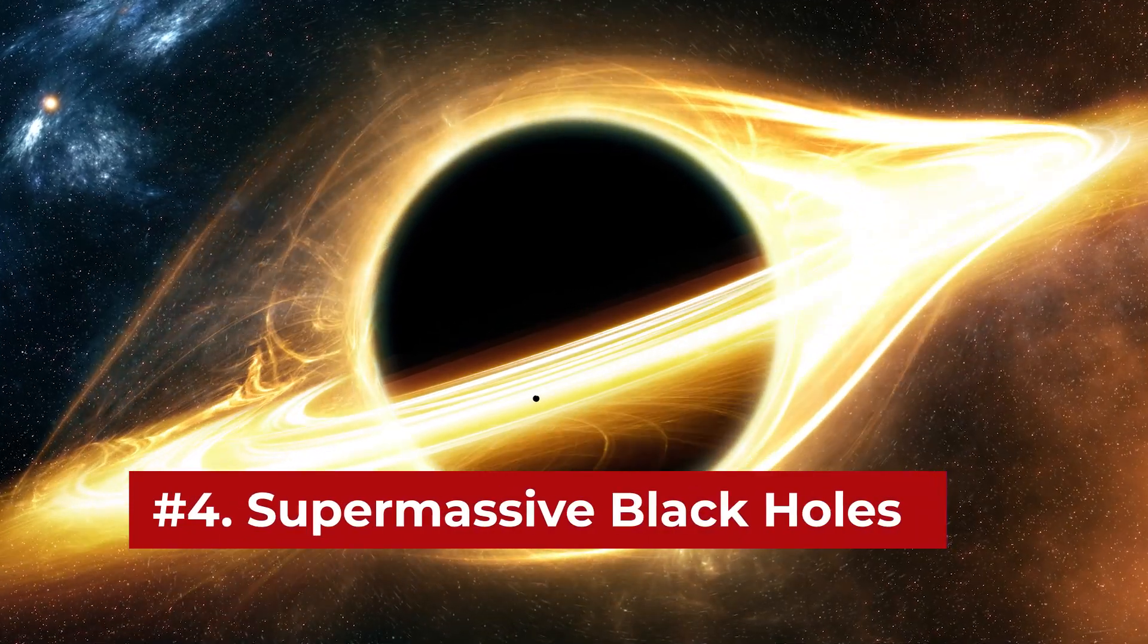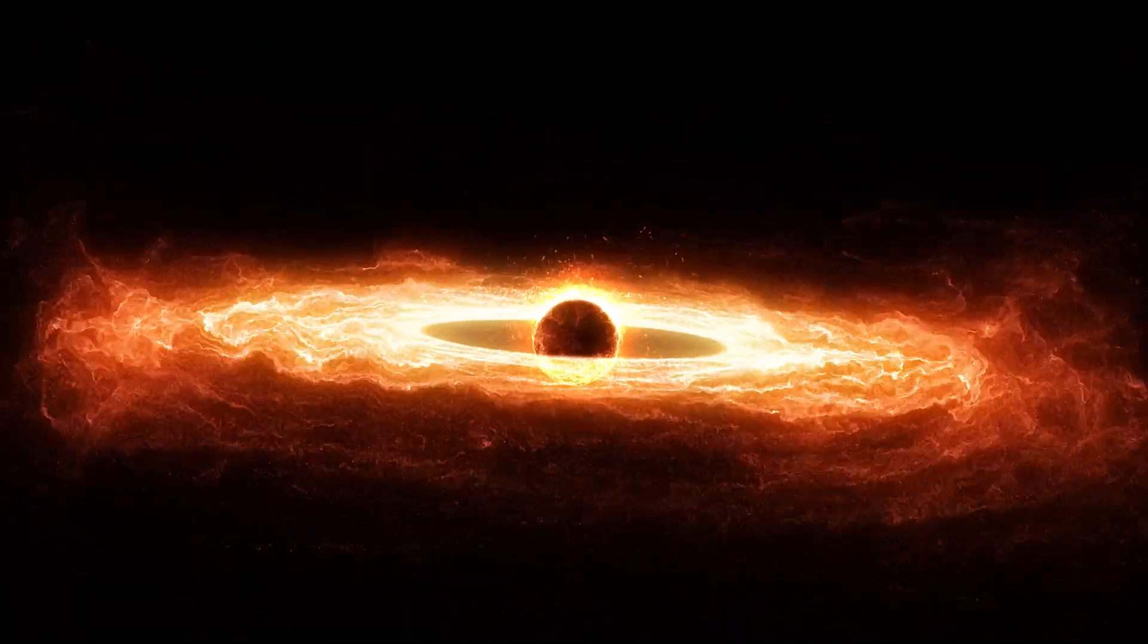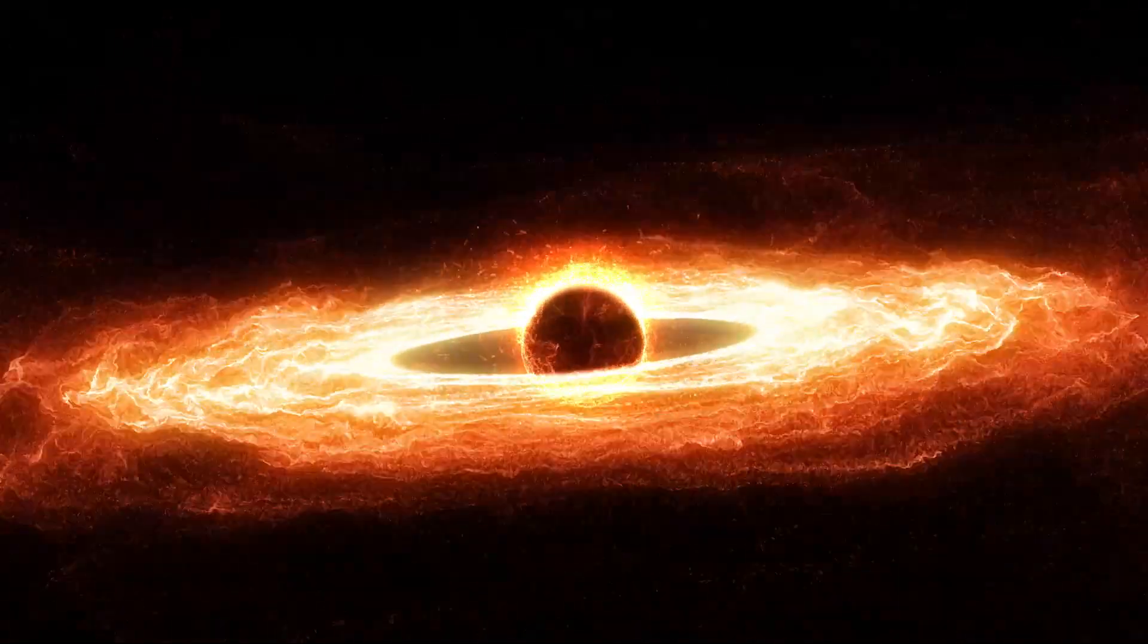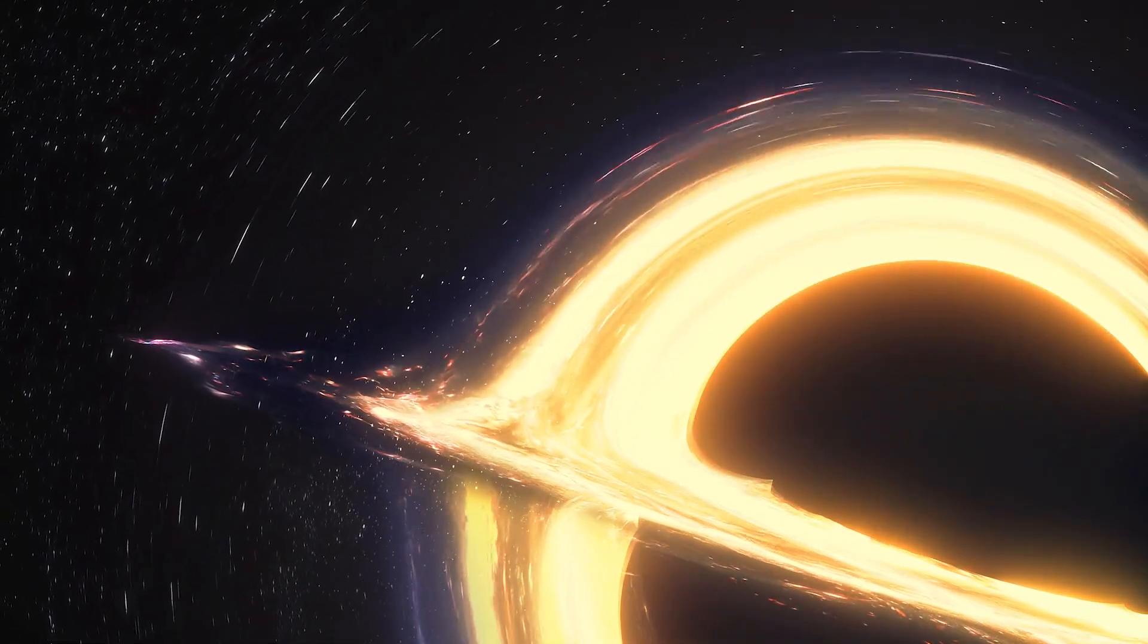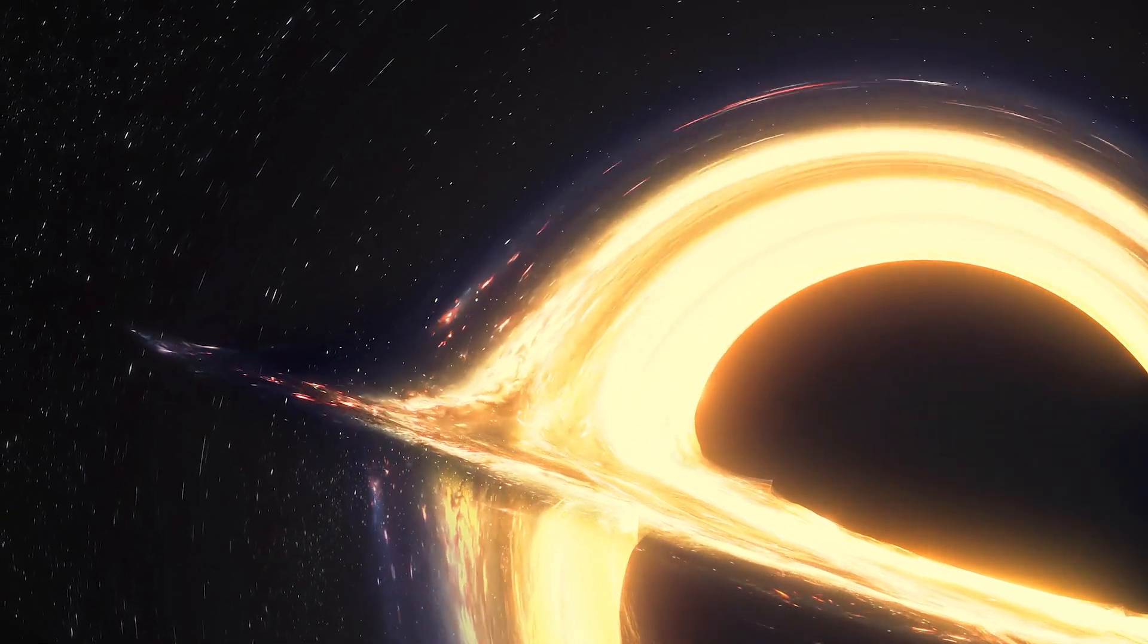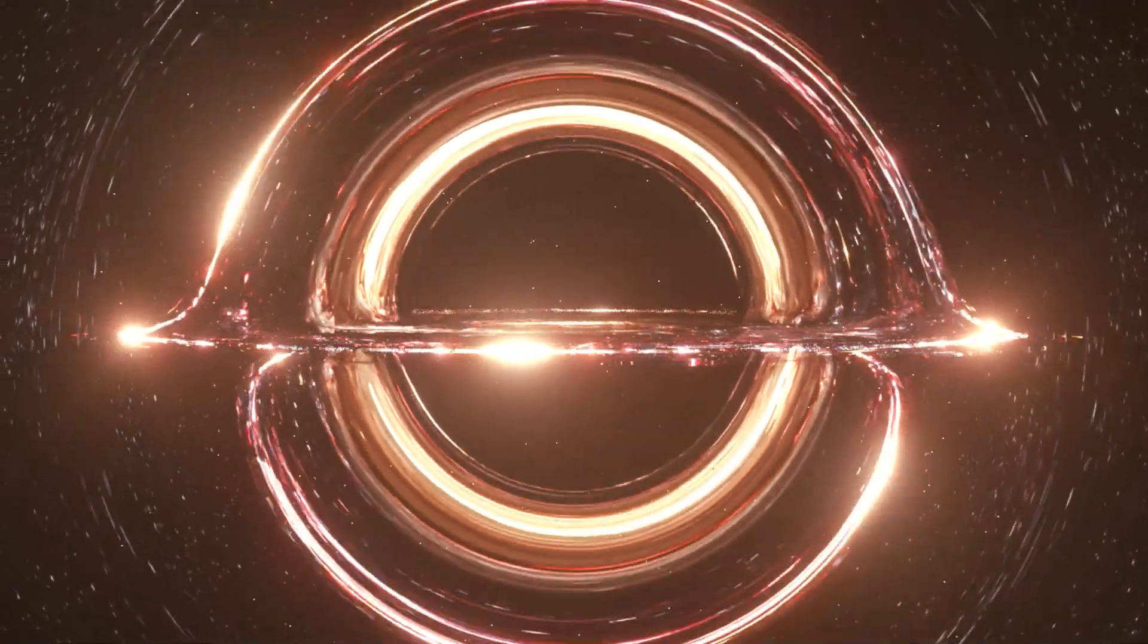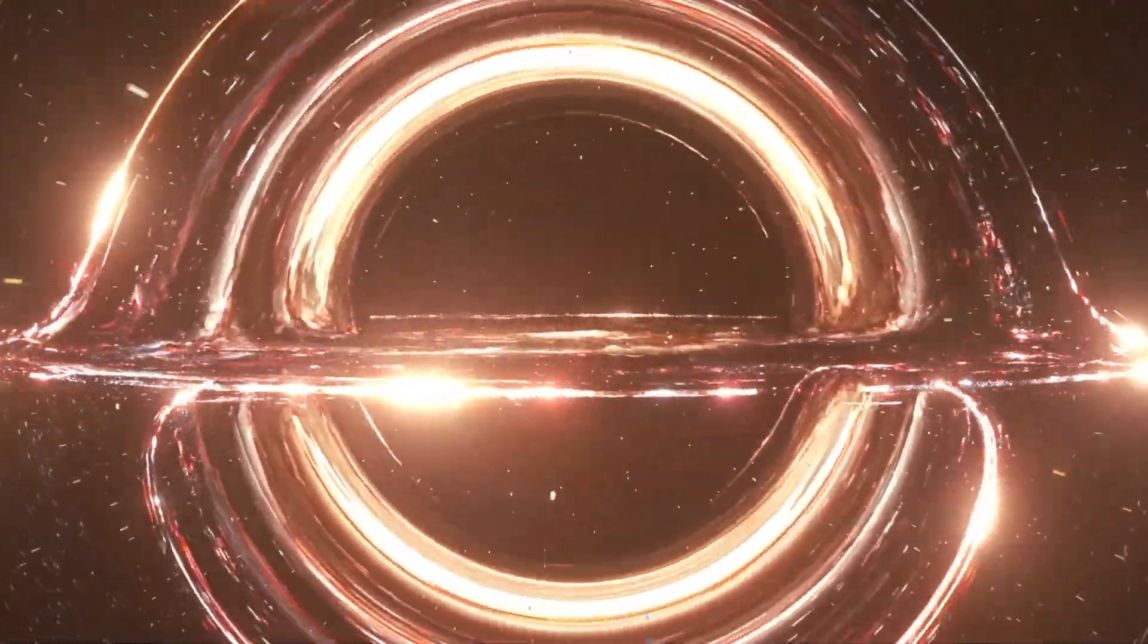Number 4: Supermassive Black Holes. Supermassive black holes are one of the most massive heavenly bodies found in space. Supermassive black holes are initially stellar black holes that are formed when a burned-out large star collapses into itself. In time, stellar black holes grow in size by attracting other stellar black holes, space dust, dark matter, and gases.